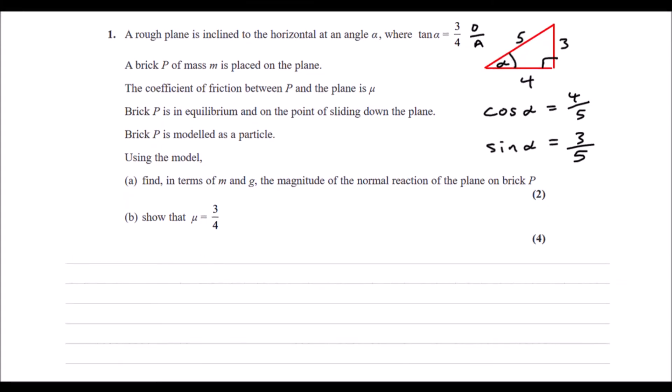So let's have a quick sketch. So I'm going to have a plane and I've got a block on it like so. So that's P. I'm going to write down all the forces. So acting vertically down is the weight. And weight is mass times gravity, mg.